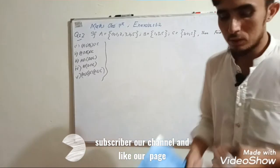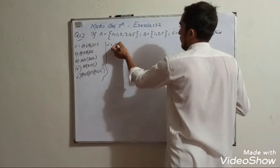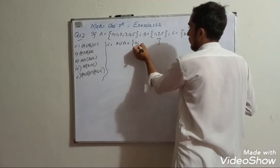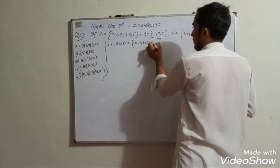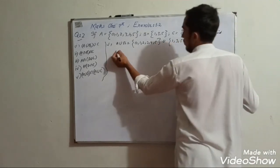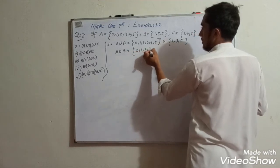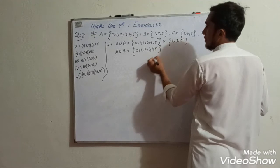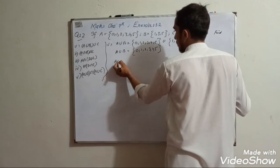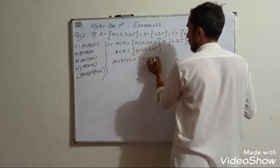A union B union C: combining all elements from A, B, and C gives {0, 1, 2, 3, 4, 5}.